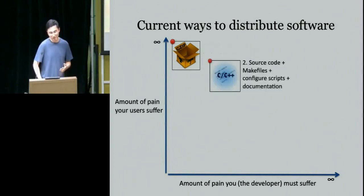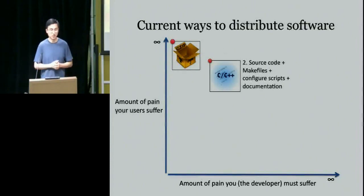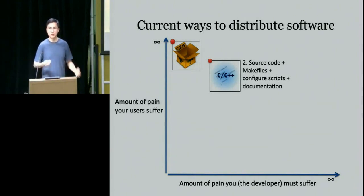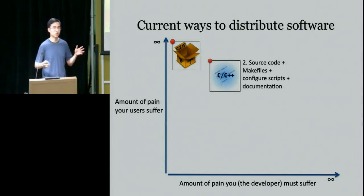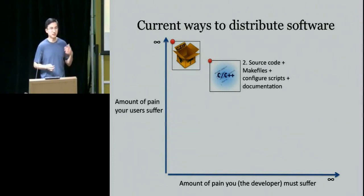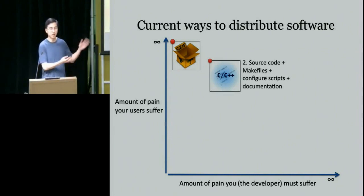The next more user-friendly option is a source distribution: package the source code, write make files, configure scripts, and documentation. It's more pain for you, but the user should be able to do configure-and-make and hopefully things work. Of course, compilation is non-trivial because they need the right compiler toolchain, the right libraries, and everything in order to actually compile your software.